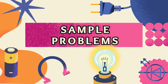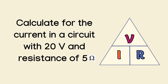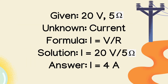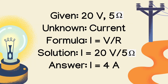Now let's try to solve some sample problems. First, calculate the value of current in a circuit with 20 volts and a resistance of 5 ohms. The givens are 20 volts and 5 ohms; unknown is the current. The formula for current is I = V / R. So I = 20 volts / 5 ohms. The answer is 4 amperes.